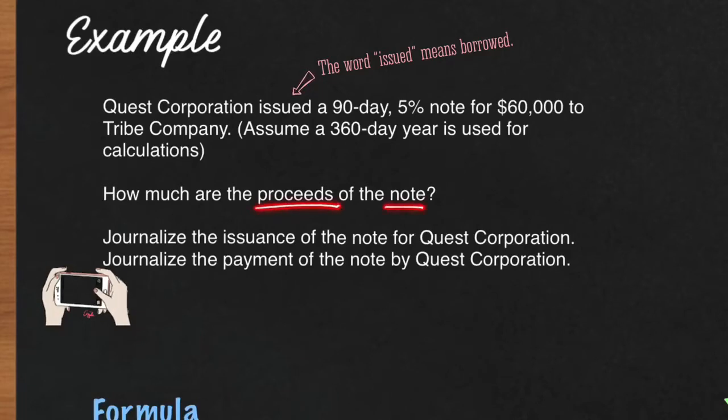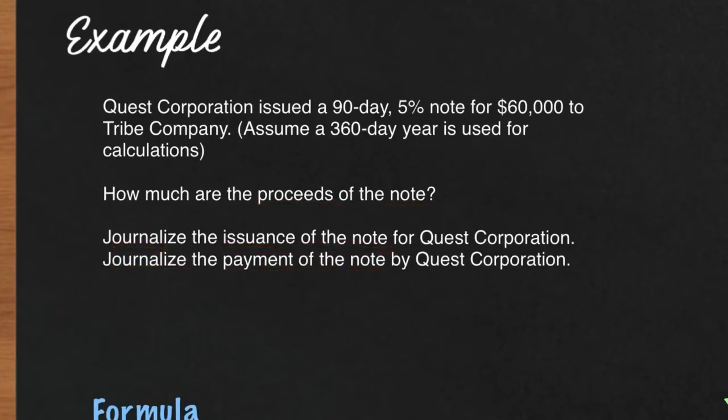In this problem we're going to calculate the proceeds of the note. Proceeds means how much you're borrowing. Then we're going to journalize when the note is issued or borrowed, and then journalize when the company Quest Corporation pays it back.